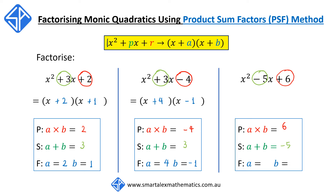F stands for factors. The two numbers a and b that satisfy both conditions are a equals negative 3 and b equals negative 2, since negative 3 times negative 2 gives positive 6, and negative 3 plus negative 2 gives negative 5. Once a and b are known, the factorisation of x squared minus 5x plus 6 is simply (x minus 3) times (x minus 2).